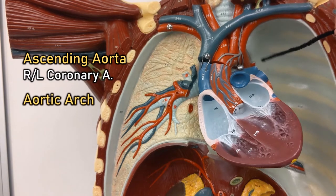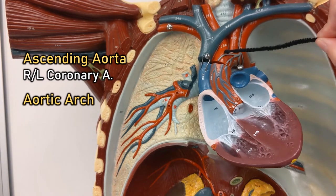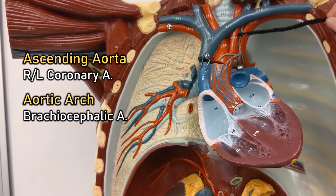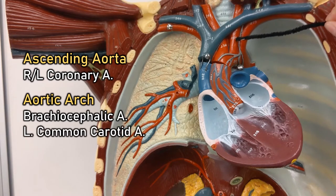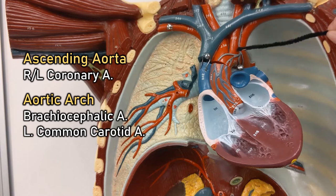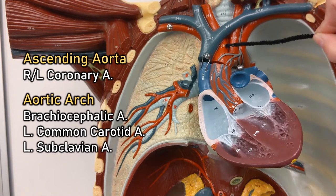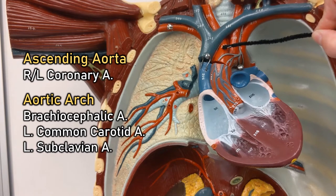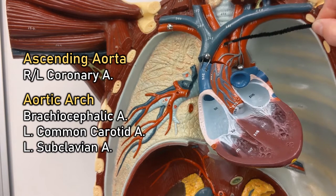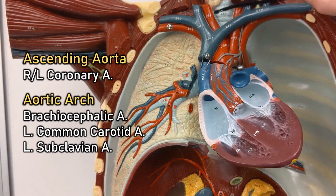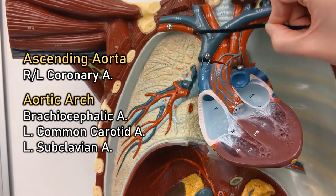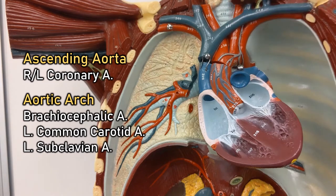The aortic arch has three branches: the brachiocephalic artery, the left common carotid artery which is going to the neck, and the left subclavian artery running under the clavicle. The brachiocephalic — brachial means arm, cephalic means head — almost immediately splits into the right common carotid going to the head and the right subclavian which is going to the arm.